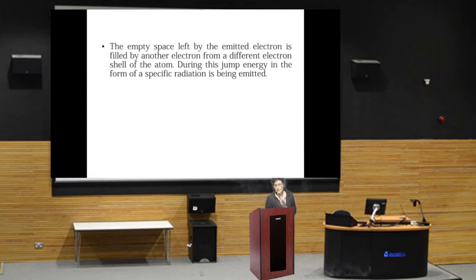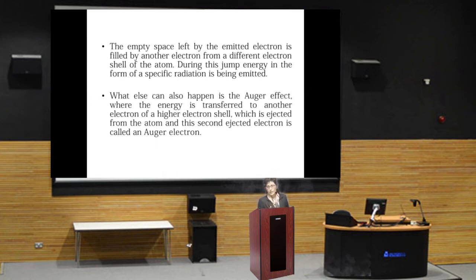The empty space left by the emitted electron is filled by another electron from a different electron shell of the atom. During this jump, energy in the form of specific radiation is emitted out. What else can also happen is the Auger effect, where the energy is transferred to another electron of a higher electron shell, which is ejected from the atom and this second ejected electron is called the Auger electron.